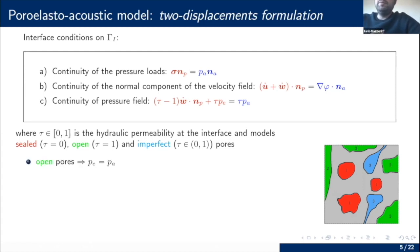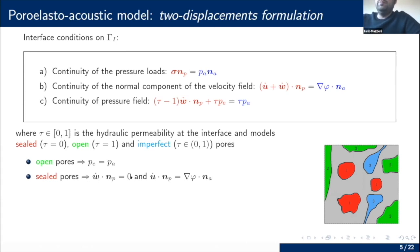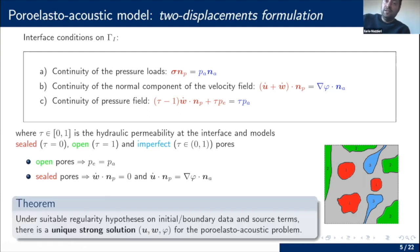For the open pore condition (tau equal to one), we have continuity of pressure between the poroelastic and acoustic domains. For the sealed pore condition (tau equal to zero), the normal component of the filtration velocity is zero, so the second condition can be expressed accordingly with the filtration velocity disappearing, and then we have a jump of pressure across the interface. Under suitable regularity hypotheses, we are able to prove that the solution exists and is unique, in the framework of the Hille-Yosida theorem.